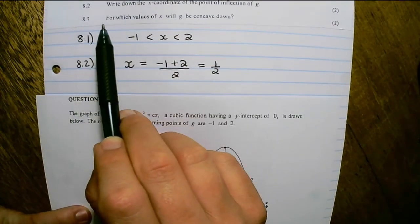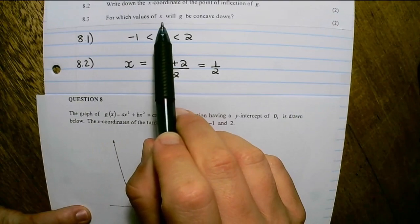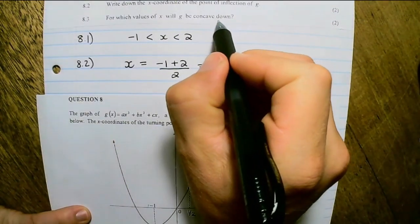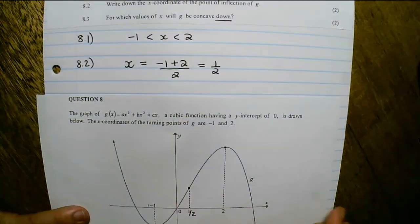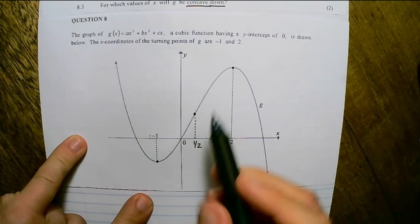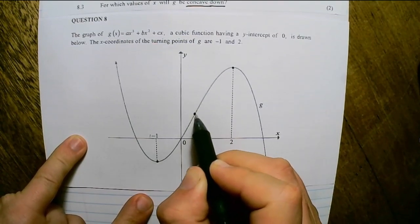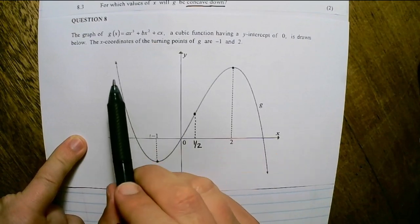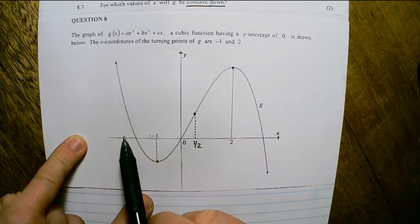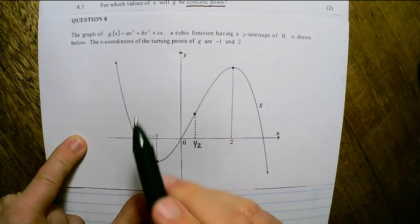8.3, for which values of x will g be concave down? Now concavity, we always discuss from the point of inflection. So if I follow the graph from left to right, up until the point of inflection,